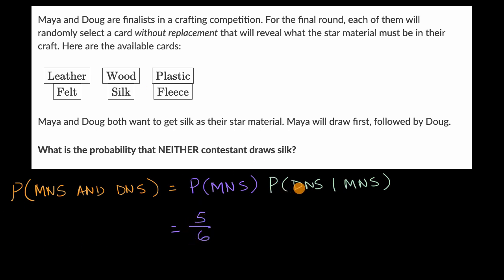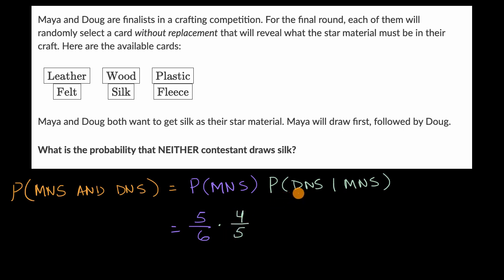And then the probability that Doug does not get silk, given that Maya did not get silk. If Maya did not get silk, then silk is still in the mix, but there are only five possibilities left because Maya picked one of them, and four of them are not silk. It's important to recognize that the probability that Doug gets no silk is dependent on whether Maya got silk or not, so it's very important to have this 'given' right over here.